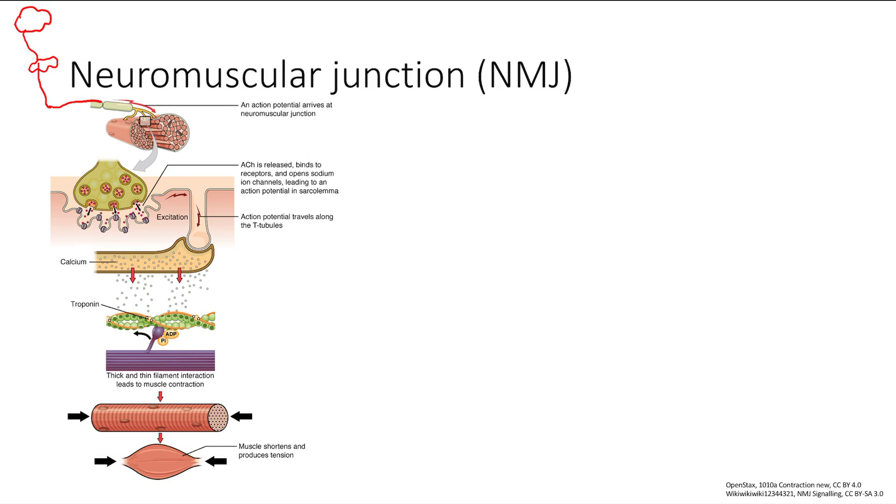So what happens is the action potential will go down, and the action potential at the end of the nerve will cause acetylcholine release.